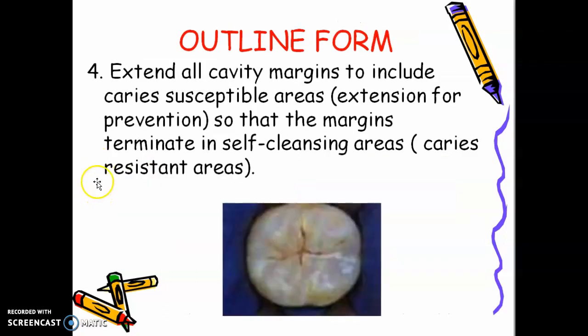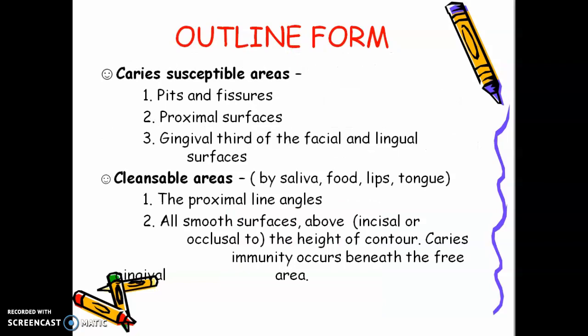Extend all cavity margins to include caries-susceptible areas, so that the margins terminate in self-cleansing areas. Caries-susceptible areas include pit and fissures, proximal surfaces, and the gingival third of the facial and lingual surfaces. Your margins should be in cleansable areas — cleansable by saliva, food, lips, or tongue. Cleansable areas include proximal line angles, smooth surfaces, and areas above the height of contour. In class 5, carries immunity is found beneath the free gingival area.